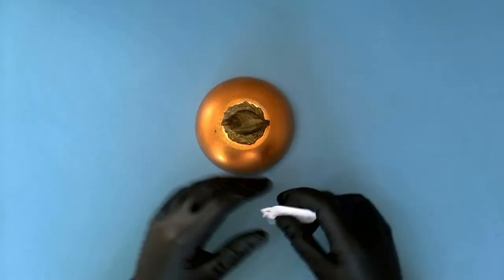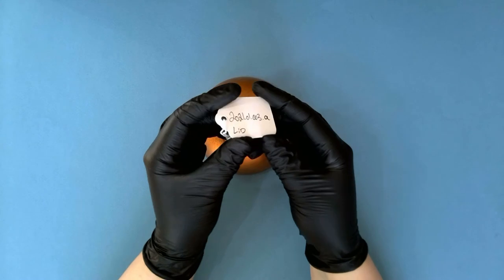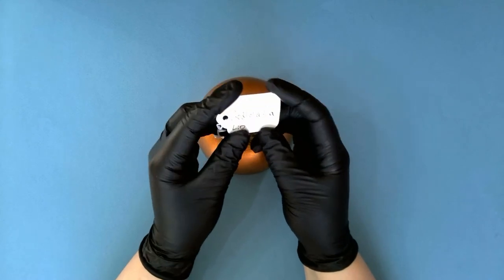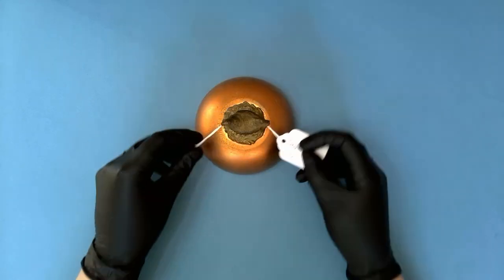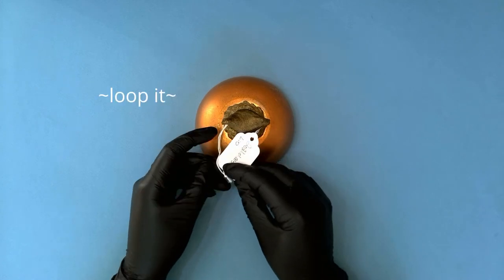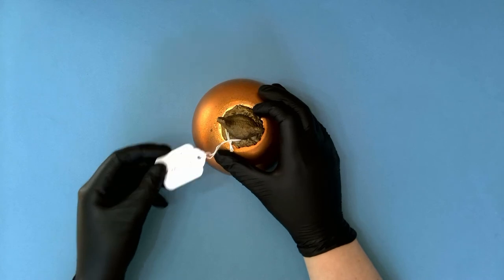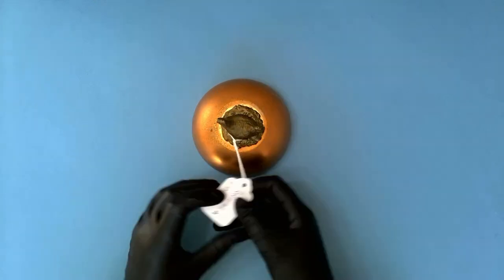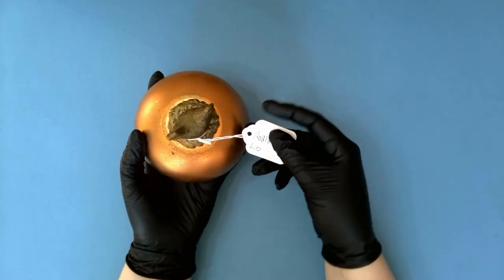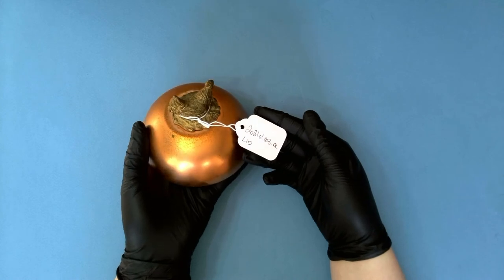I have my prepared tag with the accession number and object name, which in this case is a made-up one labeled lid. I'm just going to loop it around there. You don't even have to tie it. Just loop it. And there we go. Perfect.